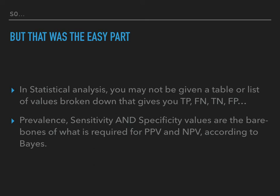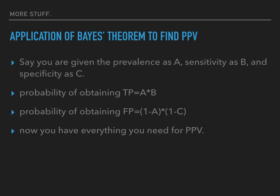In theory, you do not need those true positive, false negative, true negative, and false positive values. There's something called Bayes Theorem which can be applied to find the PPV and NPV without those specific broken-down values. I'm going to walk you through the bare bones of how to calculate them when you just have the prevalence, the sensitivity, and the specificity.